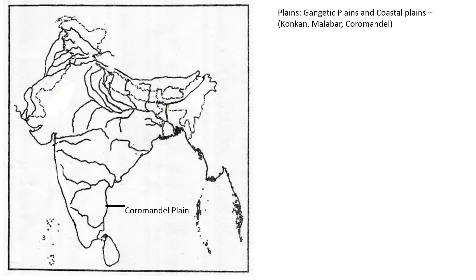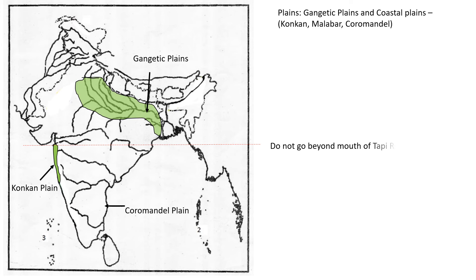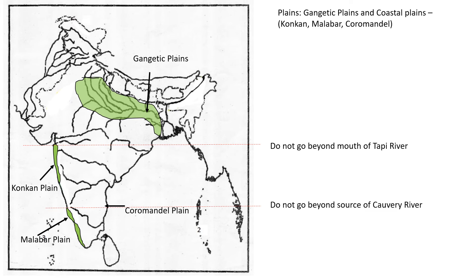The next one is the Gangetic Plain and the coastal plains. The Gangetic Plain is the plain around the Ganga — don't go inside Nepal. Then we have the Konkan Plain. Don't go beyond the Tapti River. Then we have Malabar — please don't go beyond the source of the Kaveri River. And this is the Coromandal Coast, up to the mouth of the Krishna River.